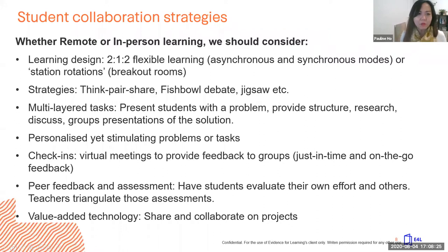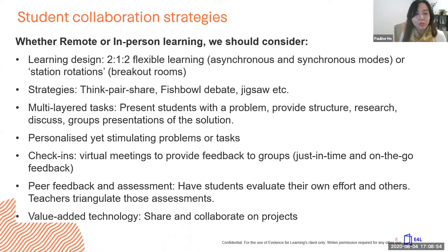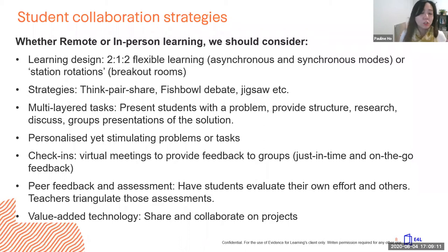One learning design to consider in a remote setting is a two-one-two flexible learning model: two days for asynchronous preparation where students do independent work to prepare, then one day to come together for discussions using breakout rooms through Zoom or Google Meet. In real in-person learning, this could mean having station rotations in class — rotating between whole class teaching, independent computer work, and group work — so that learning becomes more engaging.